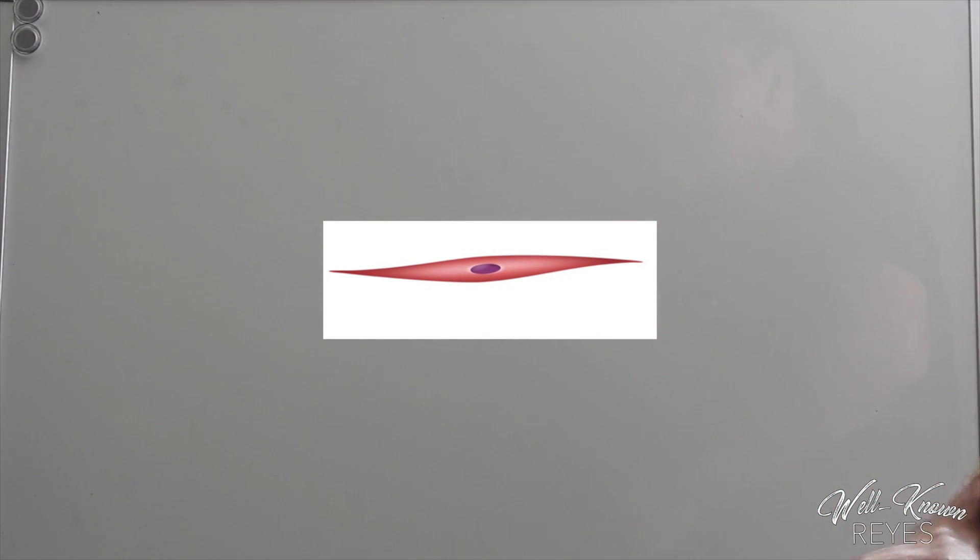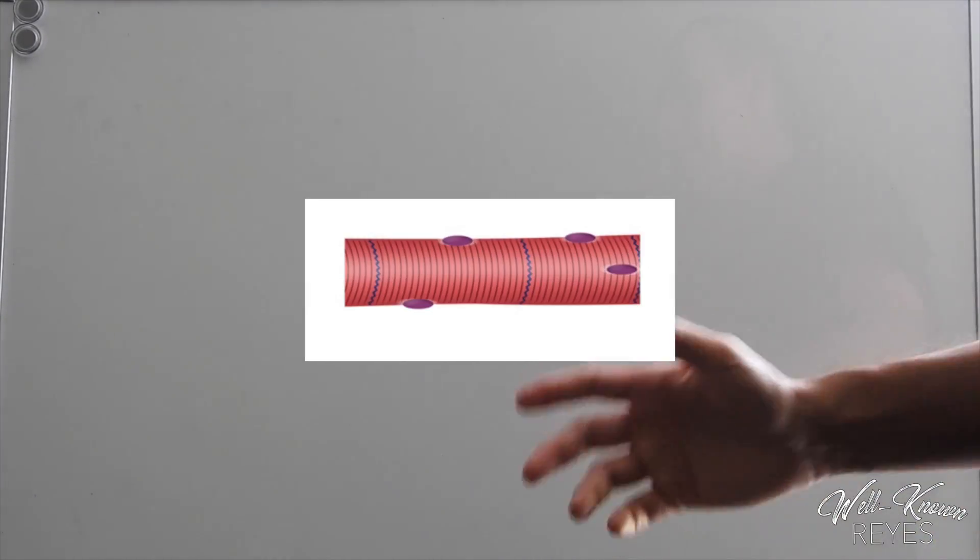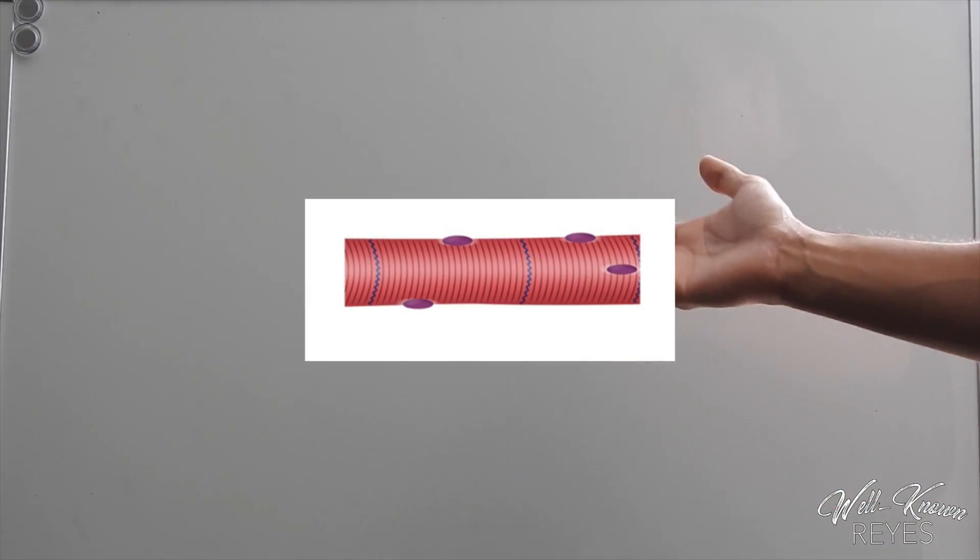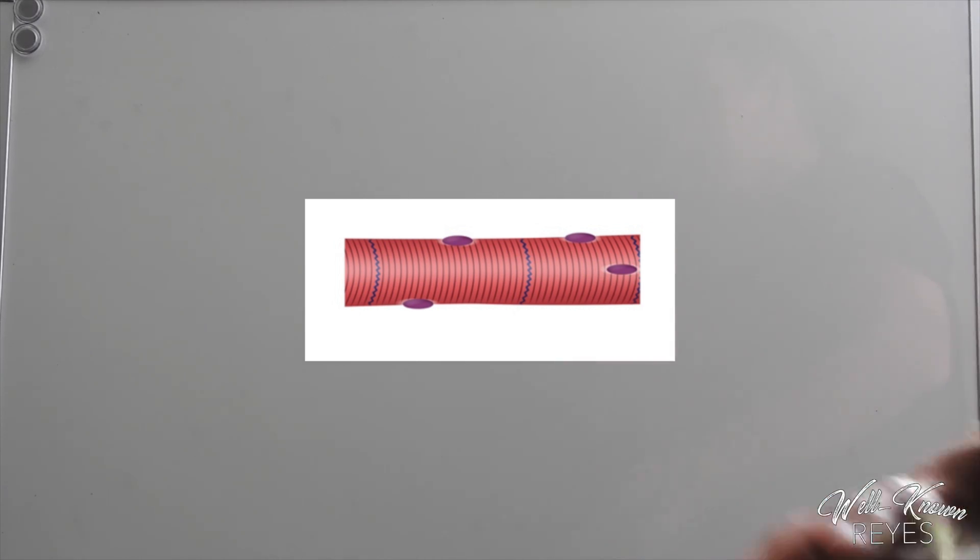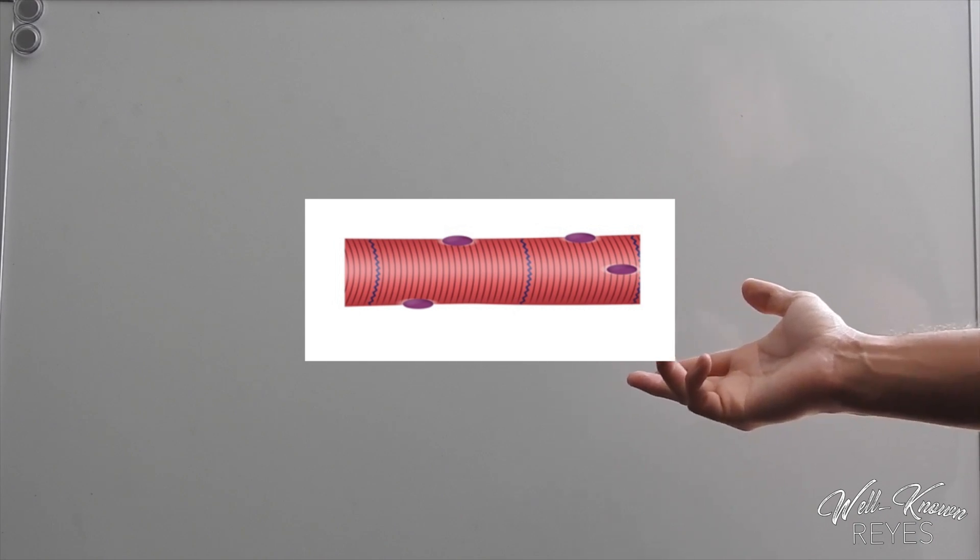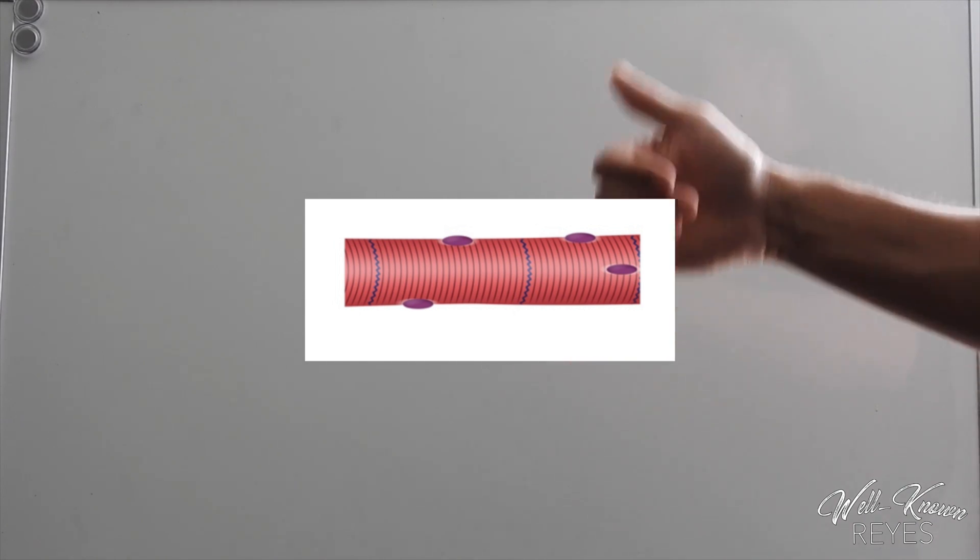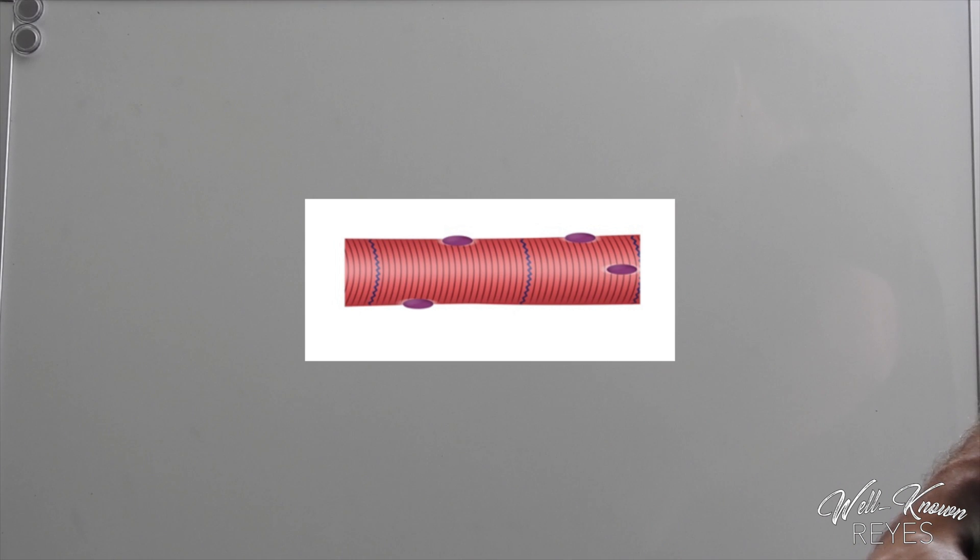And lastly, this one right here is striated. It is controlled by the central nervous system. Do you know what that one is? Very good, it is skeletal muscle tissue.